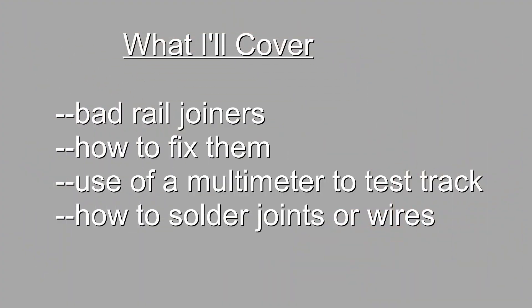So here's an outline of this video today. First of all, what do you do when rail joiners go bad? How do you fix them? How do you find them? Then I'll talk about using a multimeter to test track. And finally, I want to give a few hints on soldering joints or wires.